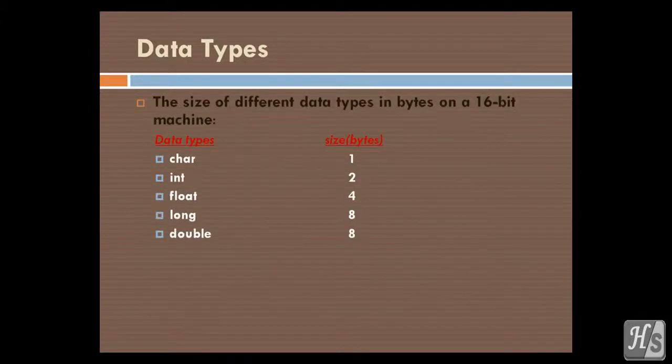The size of different data types in bytes on a 16-bit machine: char takes one byte of memory, int takes two bytes of memory, float takes four bytes of memory, long takes eight bytes of memory, and double takes eight bytes of memory.